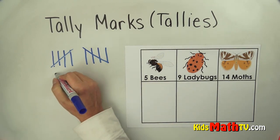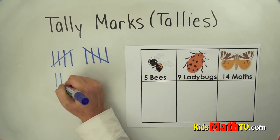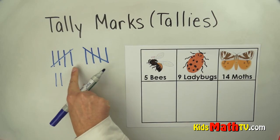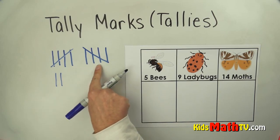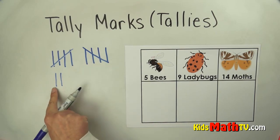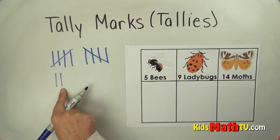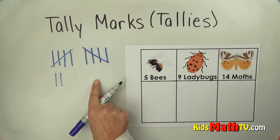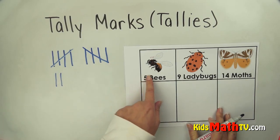If I wanted to, I could keep tallying. In this case I'd have five and five is ten: five, ten, eleven, twelve tally marks. So that's how you do tally marks. Let's practice them.